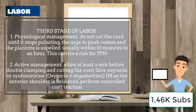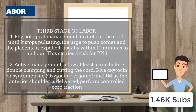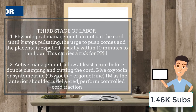Management of the third stage of labor can be done physiologically or actively. Physiological management entails not cutting the umbilical cord until it stops pulsating. The urge to push and the placenta is expelled, usually within 10 minutes to an hour, and this carries a risk of postpartum hemorrhage.